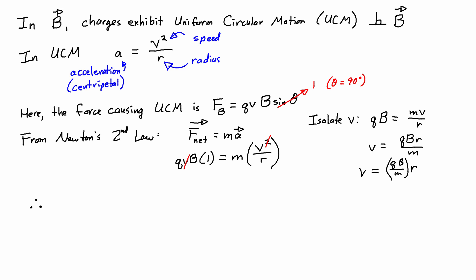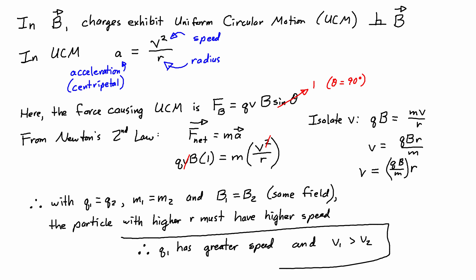Therefore, with q1 equals q2, m1 equals m2, and B1 equals B2 because they're in the same field, the particle with the higher radius must have the higher speed. Therefore q1 has greater speed, and v1 is greater than v2.